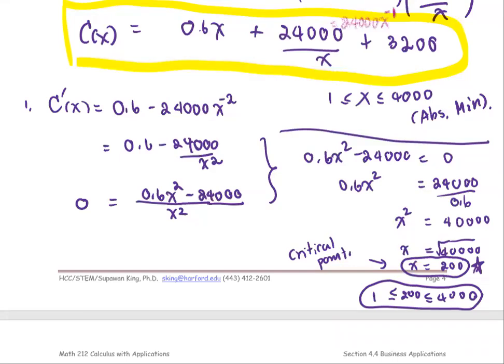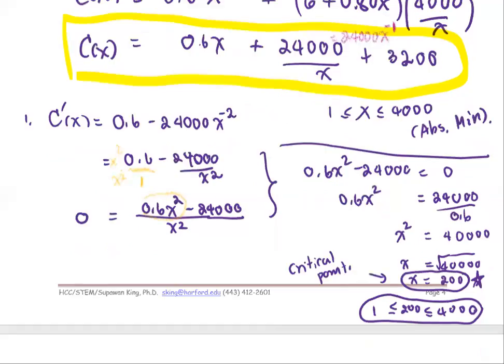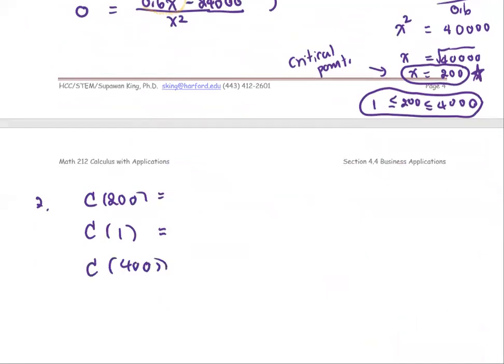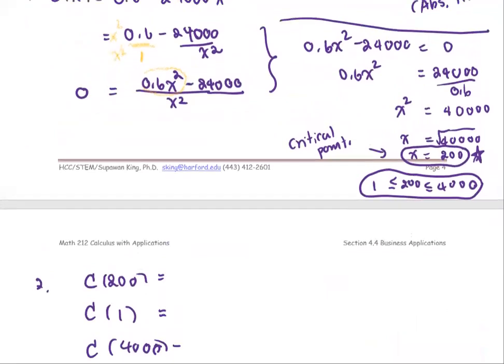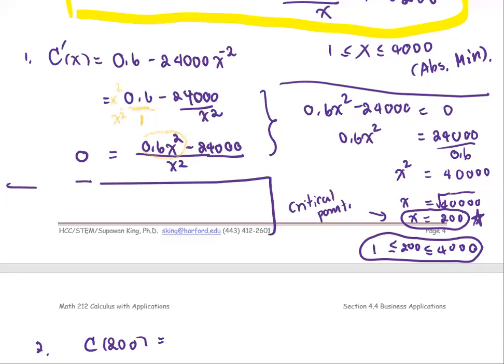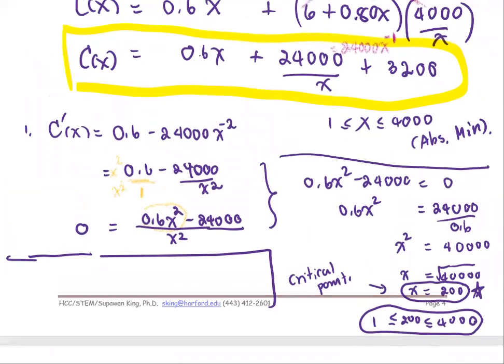Questions so far? Compute the value for each point. Okay, so next step. Step number two, we're going to compute the cost at C, which is 200, and the cost at the left end, which is cost at one item, and the cost at 4,000 items, based on the cost function. I'm going to write it again: C(X) equals 0.6X plus 24,000 divided by X plus 3,200.